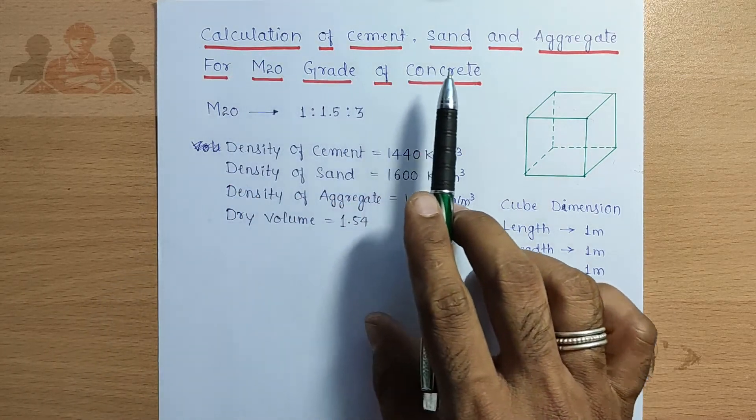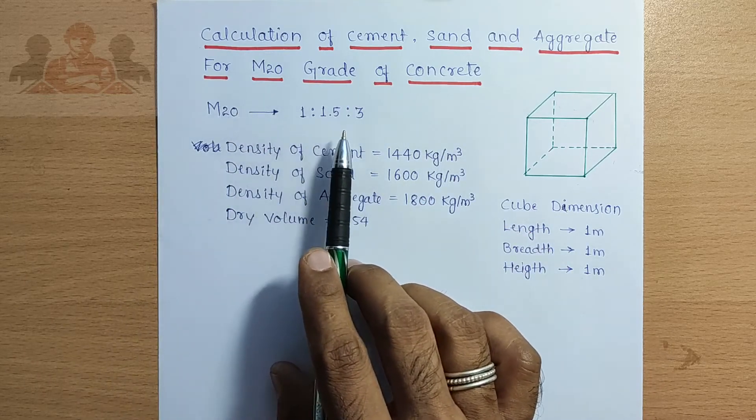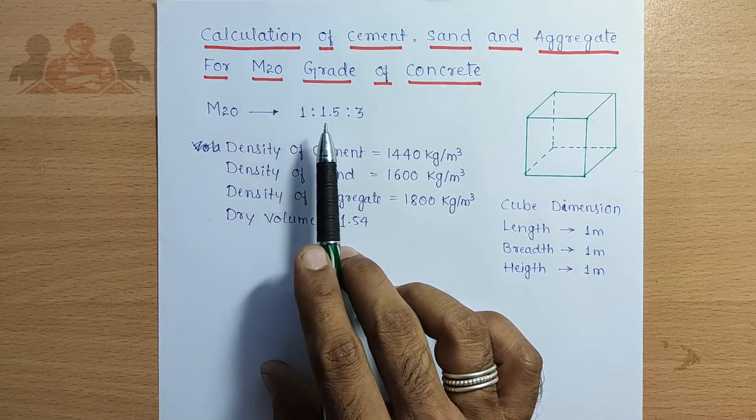This calculation of cement, sand, and aggregate for M20 grade of concrete. M20 ratio is 1:1.5:3.